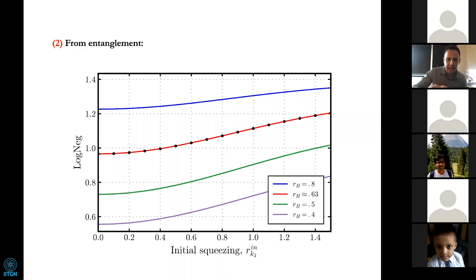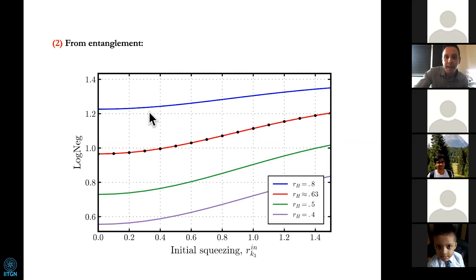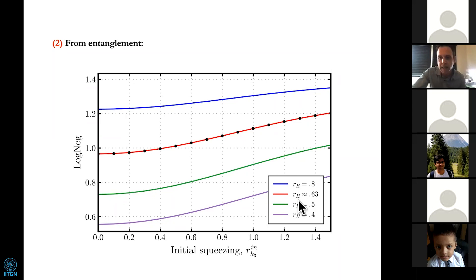The message is in this plot: imagine that black dots are experimental results — entanglement as a function of the initial squeezing for a single frequency — and these lines are theoretical curves for different values of the Hawking squeezer intensity Rh. By matching theory and experiment you know that in your experiment the Hawking intensity is, say, 0.63. If you do that for different frequencies, you can confirm whether this Hawking intensity corresponds to a Planckian spectrum or not. Therefore, in a single measurement — a single protocol — you can check both the entanglement and the Planckianity: the two main aspects of the Hawking effect.